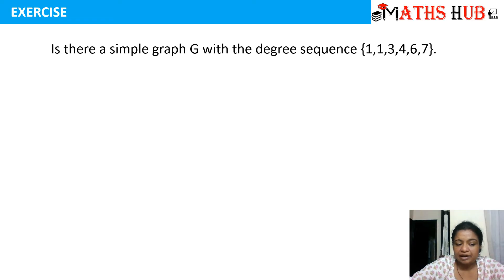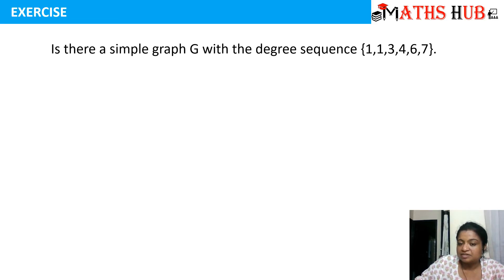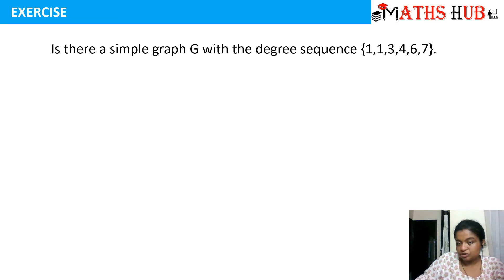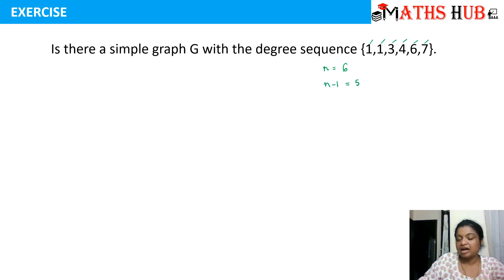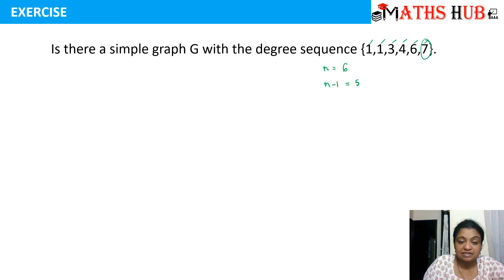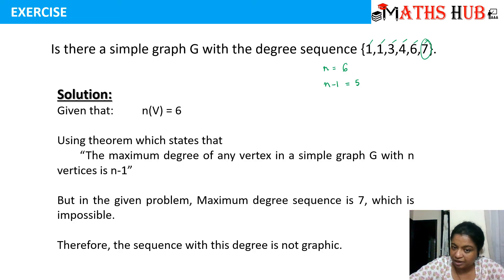The next question asks: is there a simple graph G with the degree sequence 1, 1, 3, 4, 6, 7? A degree sequence lists the degrees of all vertices in order, so this graph has 6 vertices, meaning n equals 6. For a simple graph, the maximum degree of any vertex is n minus 1, which is 5. But the sequence contains vertices of degree 6 and 7, both exceeding 5. Therefore, this cannot be a simple graph — no such graph exists.